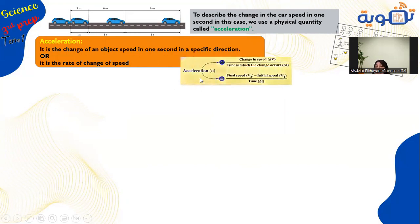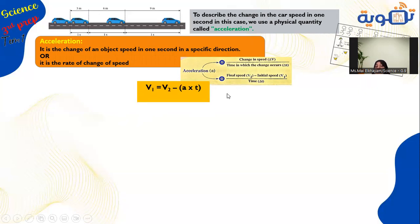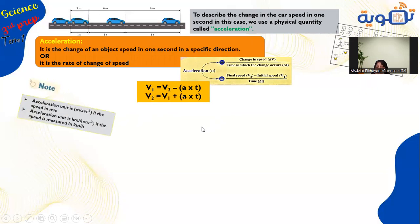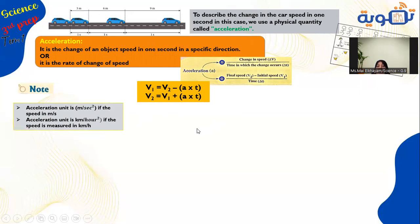To calculate acceleration: A equals delta V over delta T, which equals final speed V2 minus initial speed V1 over time. To calculate V1: it is V2 minus acceleration multiplied by time. V2 equals V1 plus acceleration multiplied by time. The unit of acceleration is meter per second squared or kilometer per hour squared.